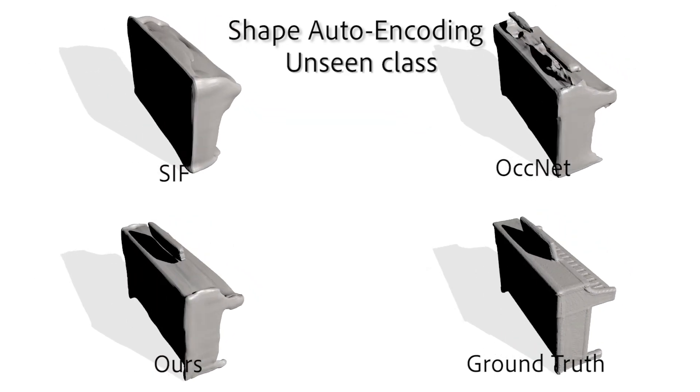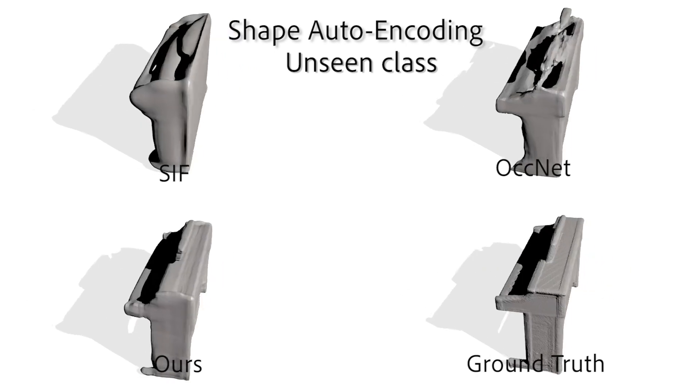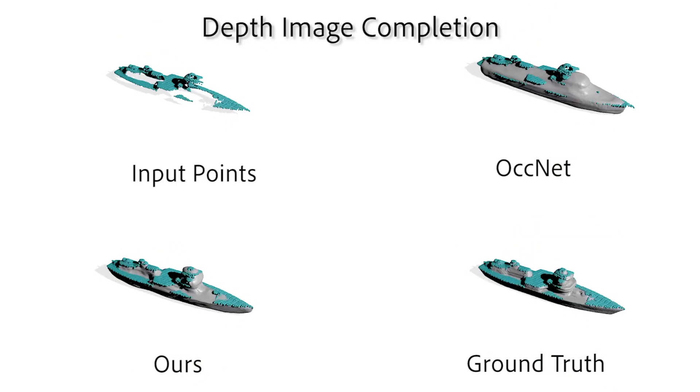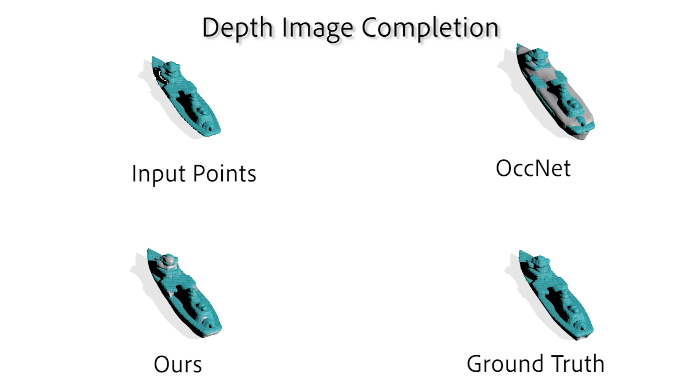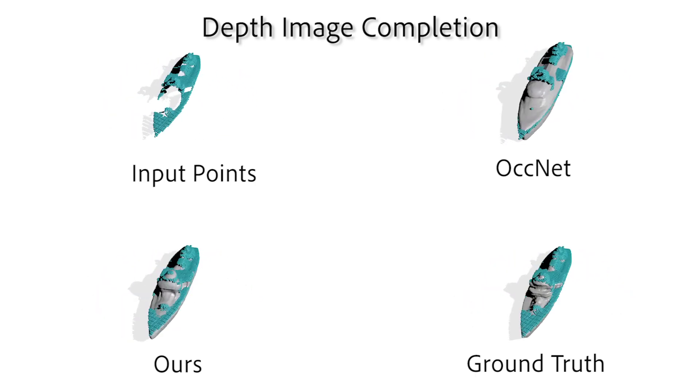DSIF generalizes better to unseen classes because of its independent local latent features. Shape completion results from a single depth image show improvements of over 15 points.